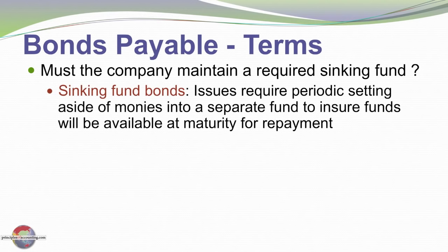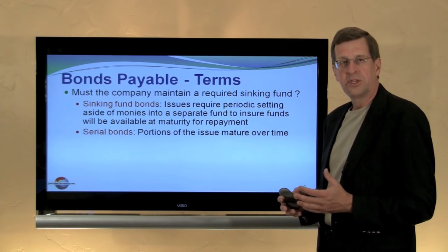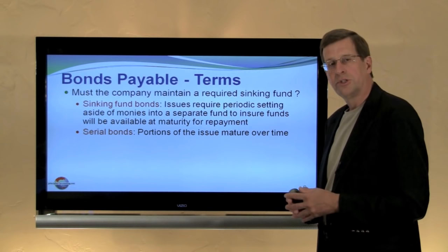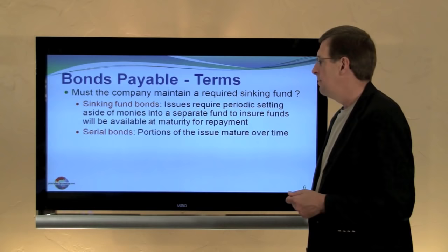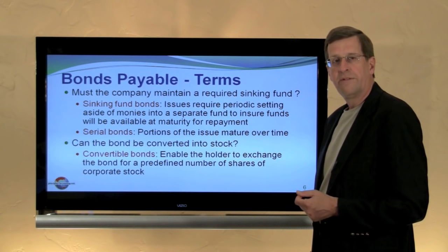There is always a question about whether there will be sufficient funds to pay bonds at maturity. Some bond indentures stipulate that a company periodically set aside funds in a separate trust account — essentially a sinking fund — to ensure that money will accumulate and be available to pay bonds at maturity. Serial bonds are those that mature periodically over time, so a large bond issuance might have some maturing in 2020, some in 2025, and some in 2030, rather than all in a lump sum at one future date.